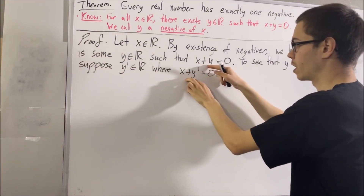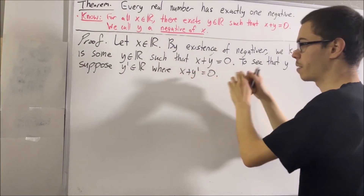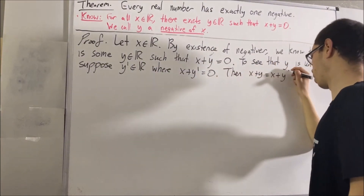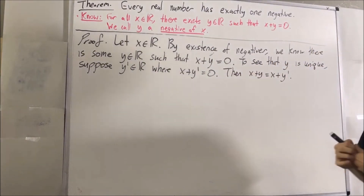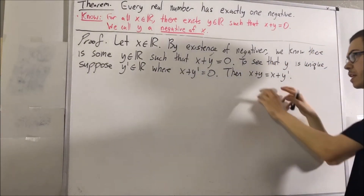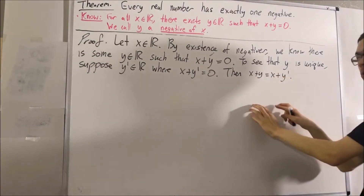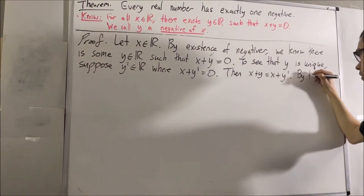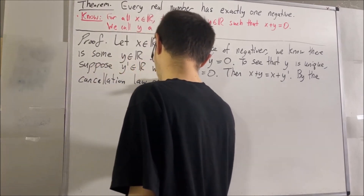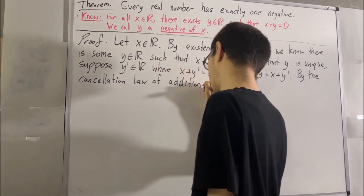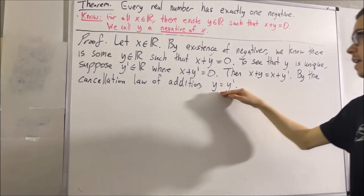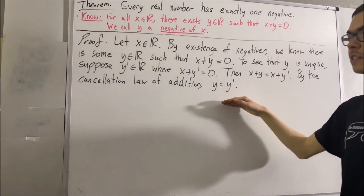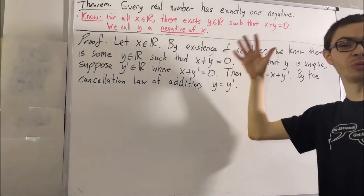So, x plus y and x plus y prime must be equal to each other. But then, by the cancellation law for addition, the x's go away and we're left with y is equal to y prime. And this is exactly what we wanted to deduce. So, this proves that y is unique.